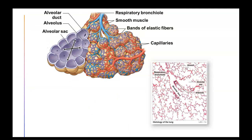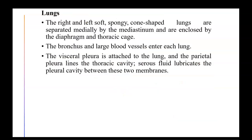The alveoli are only one cell thick, made of simple squamous epithelium, as seen in the histology slide. The extreme thinness of the alveolar wall is very important — the thinner it is, the easier it is for carbon dioxide to diffuse out and oxygen to diffuse in across that membrane into the bloodstream.